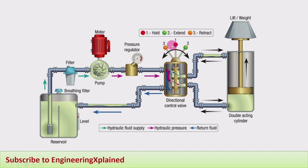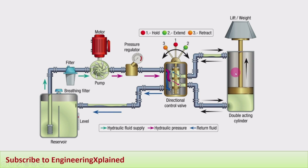In the first position — hold — shown in red, there is no flow of fluid; whatever fluid is there stays at that position. In the second position — extend — flow takes place at the bottom, causing the piston to extend and carry the load.